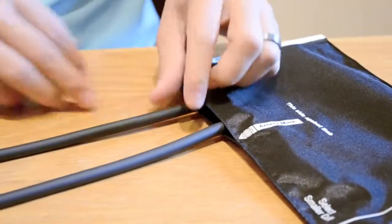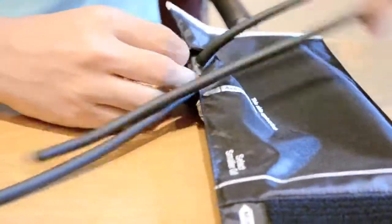Once the bladder is properly aligned within the cuff, the tubing is then threaded through the flap of material along the edge of the cuff opening, securing the bladder within the cuff.